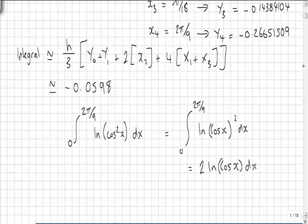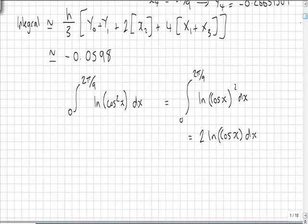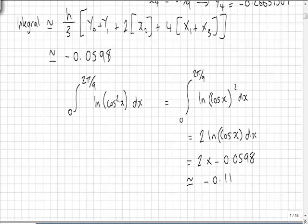So essentially if we just double our answer from the first part, that's going to be 2 times minus 0.0598, which gives a suitable approximation of minus 0.1196.